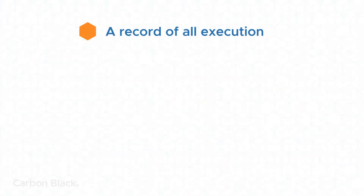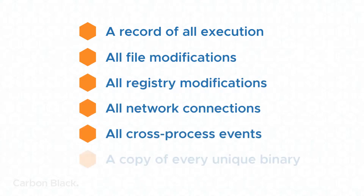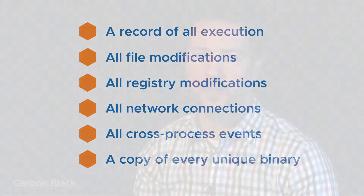Those six key things are: a record of all execution, all file modifications, all registry modifications, all network connections, all cross-process events, and a copy of every unique binary. With those six things — plus the cause-effect relationships among them — we felt it would be really hard for an attacker to hide.